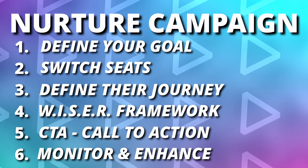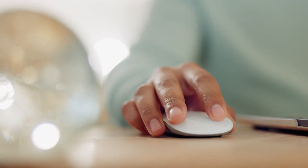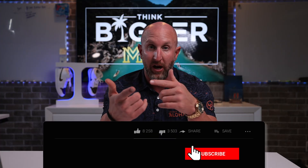Last but not least, number six — you need to monitor and enhance your nurture campaign. You're going to create this thing, and it's going to be beautiful, but you're always learning and improving as you get more data. Right now you're developing this based on theory. Things you should be tracking: click-through rates, did they open the email, what did they click on, did they unsubscribe, did people become non-responsive at a certain point? The more data you have, the more you can pivot and enhance to make sure you're directing them the right way.